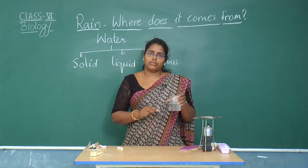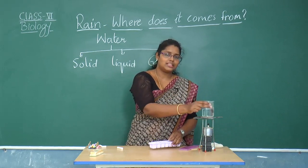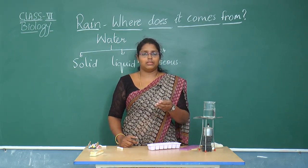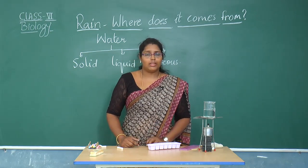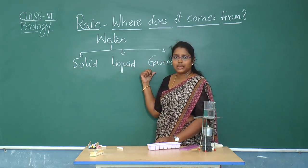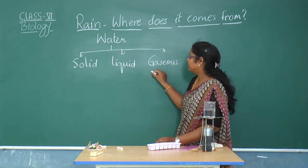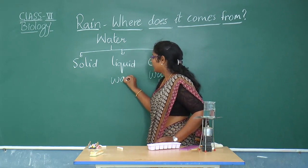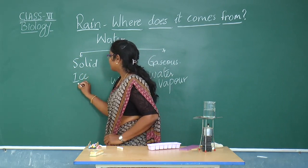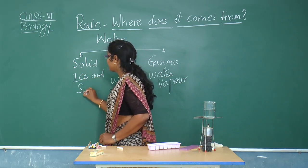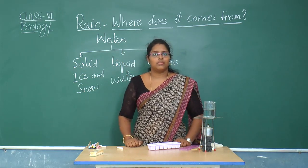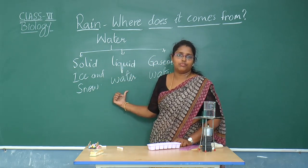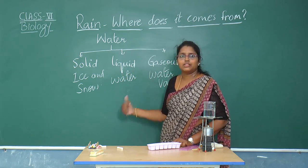The solid form exists in the form of ice or snow. When we put water in an ice cube tray and freeze it, the water gets cooled and ice cubes form. When the water is heated, it converts into the gaseous state — the form of water vapor. So in the solid state water exists as ice and snow, in the liquid state as water, and in the gaseous state as water vapor.